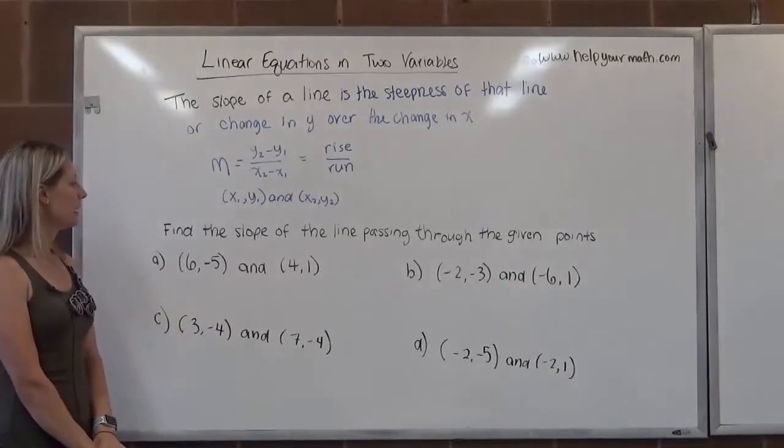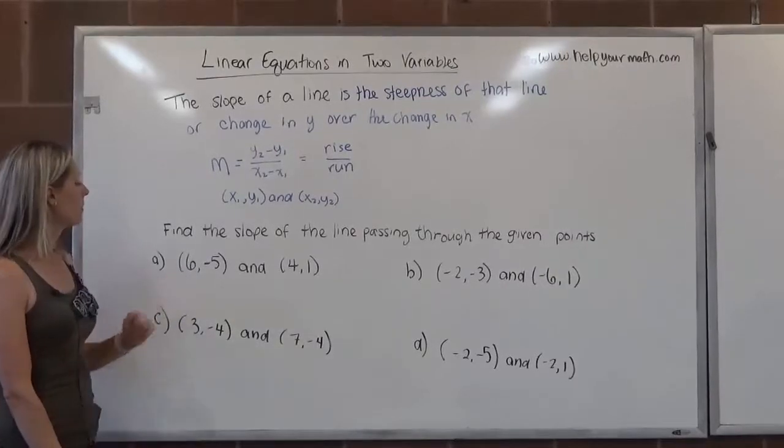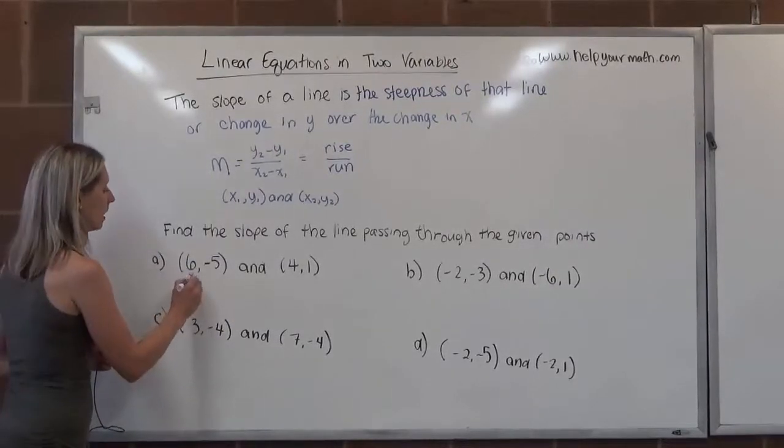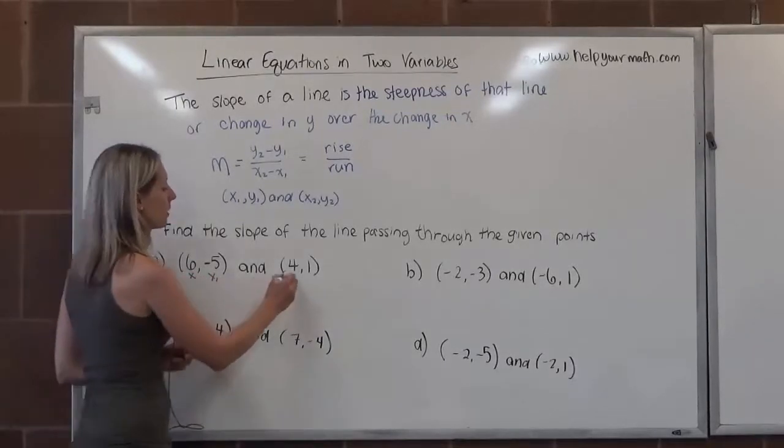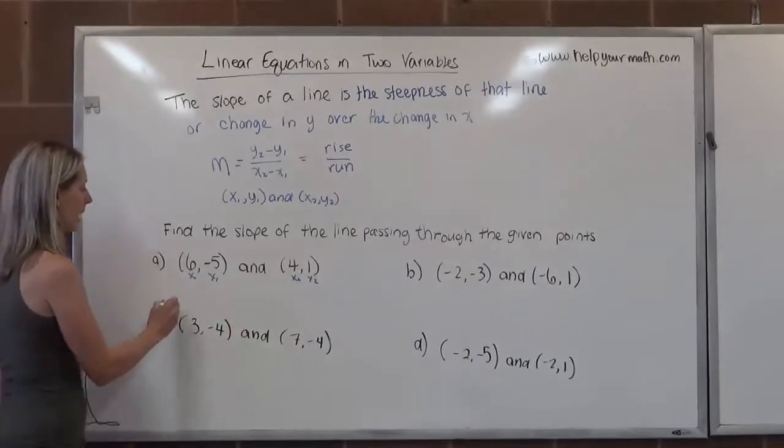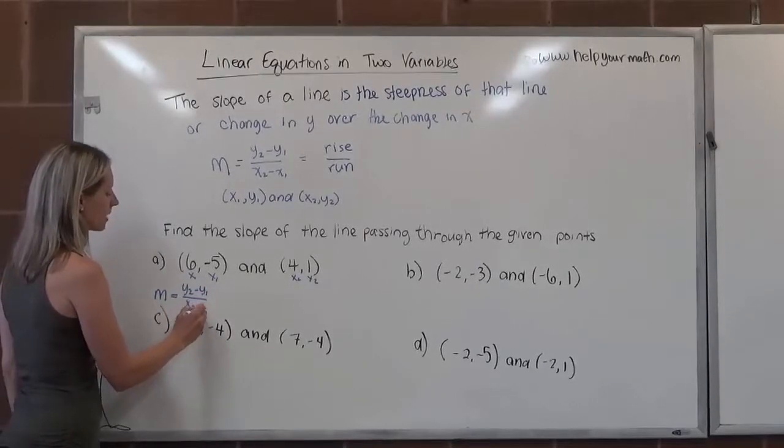Okay, so let's look at some examples. We want to find the slope of the line passing through the given points. So here we're given the points (6, -5) and (4, 1). If it's helpful, label your points. Also, if you don't have the slope formula memorized, write it down every time. So if you don't know it, write down m equals y2 minus y1 over x2 minus x1.